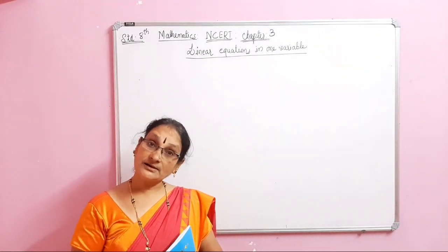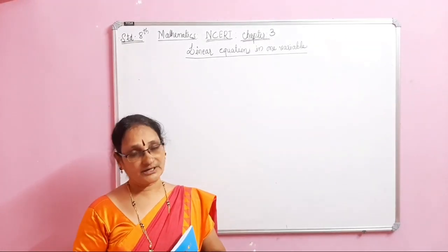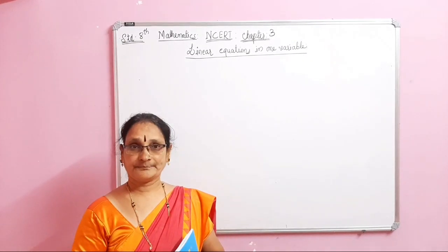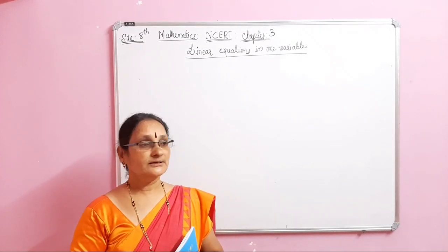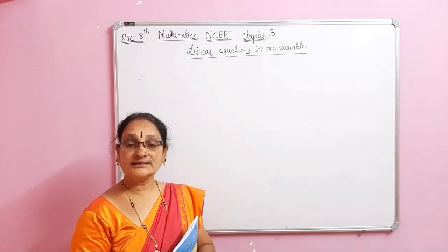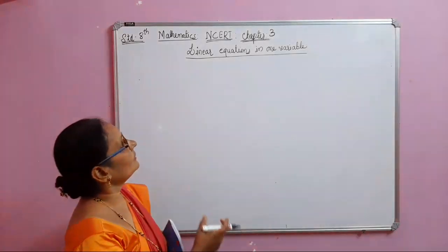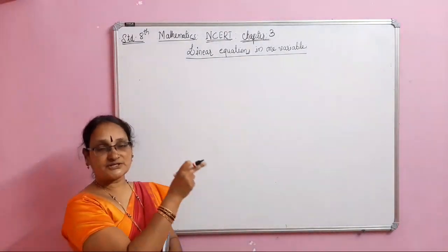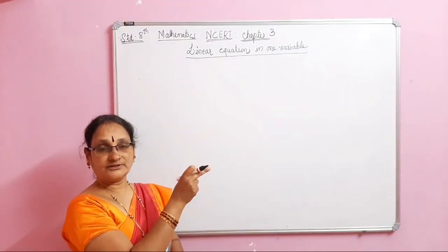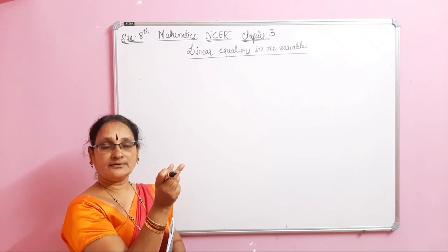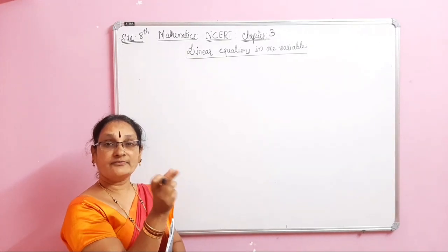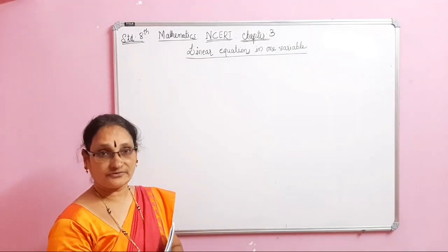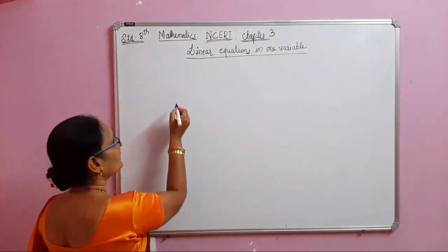An algebraic term is a combination of a variable and numbers. An algebraic expression with one variable of power 1 is called a linear equation.